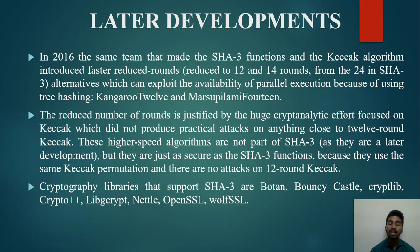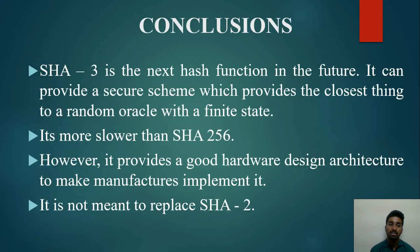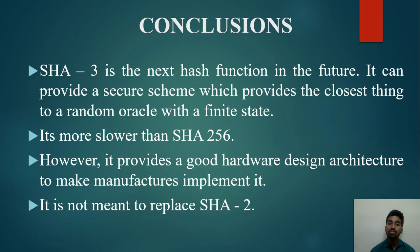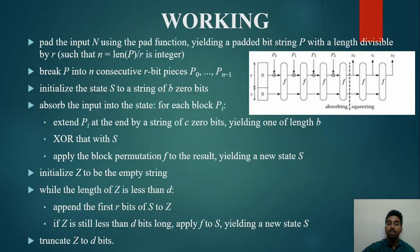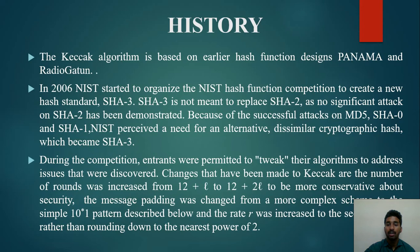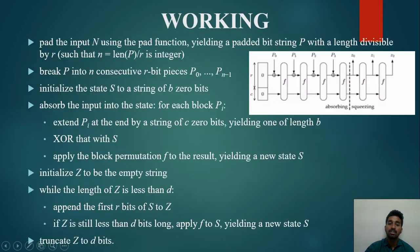In conclusion, SHA-3 is the next hash function for the future. It provides a secure scheme offering the closest thing to a random oracle with a finite state. It is slower than SHA-256; however, it provides a good hardware design architecture for manufacturers to implement. SHA-3 is not meant to replace SHA-2, as the need for a new algorithm arose from successful attacks on MD5, SHA-0, and SHA-1.